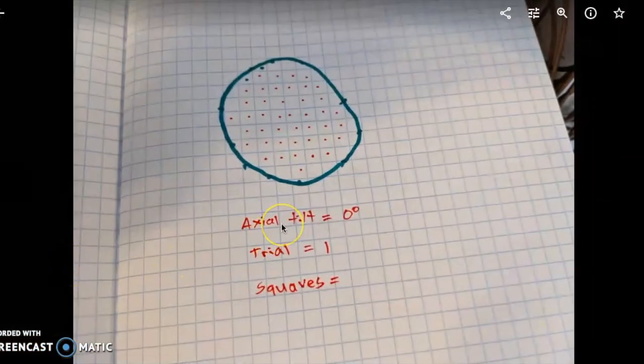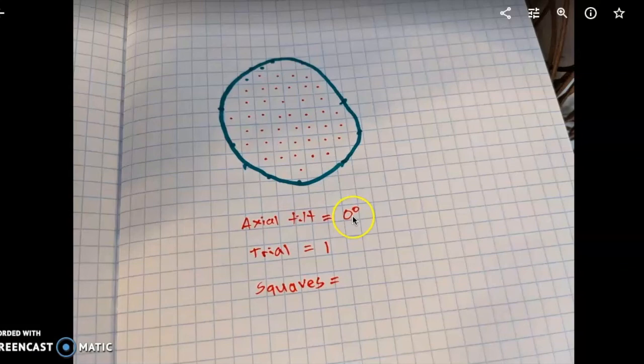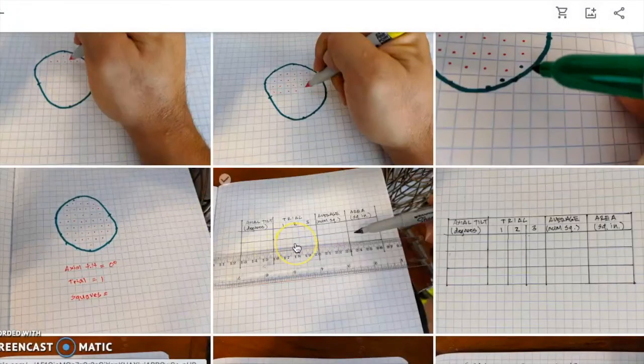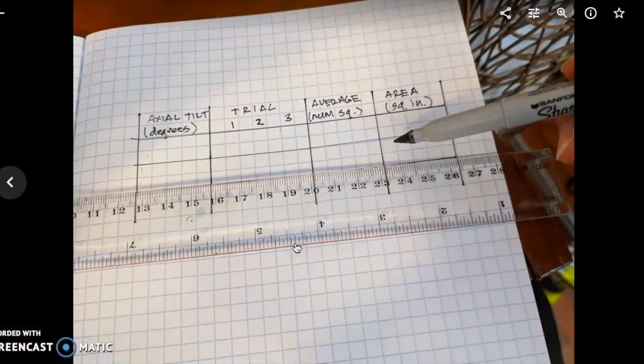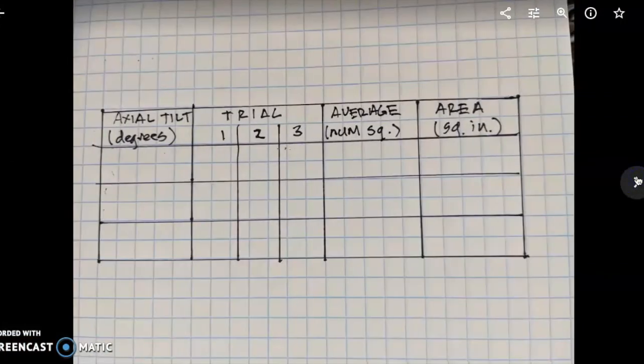Right here on each page, I was able to make a summary - axial tilt is zero, and then the trials we had one trial, because I want to have a total of three trials later. And then I counted however many squares and put that number there. Okay, then I was able to make a table. When I make the table and do that and fill in that table there, so I have the axial tilt in degrees, I have three trials and my average number of squares, and then I should be able to calculate that in square inches.